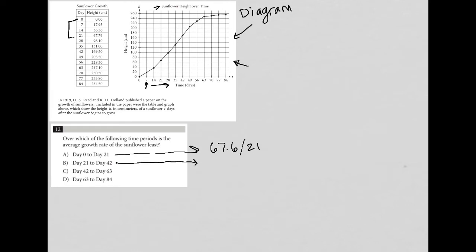So day 21 to 42, that's also going to have a 21 day time period as my denominator. But day 21 starts at 67.6, day 42 goes up to 169.5. Even without grabbing my calculator, I can see that's over 100, right? So 100, let's say 102 divided by 21. That's going to be the higher growth rate. So I should cross B out. Choice A is lower. Again, we're looking for the least.